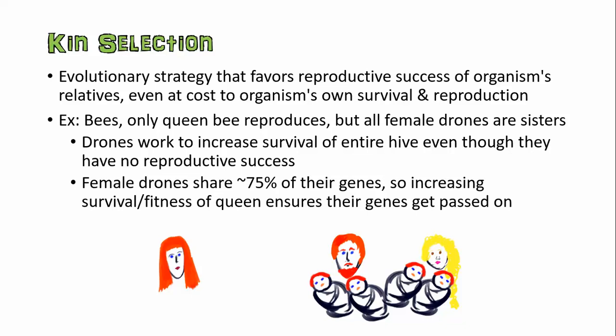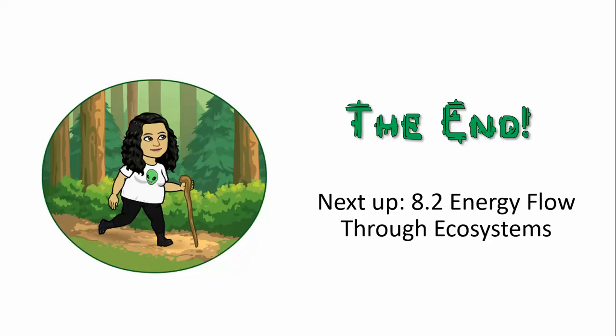So that's kin selection: I'm going to help you out because you share my genes. You just make sure you're passing on some of my genes too. And I'm not going to produce more babies to compete with you. Next up, we're going to talk about energy and how it flows through ecosystems. Hopefully this one will be a little faster coming. See you guys in class.